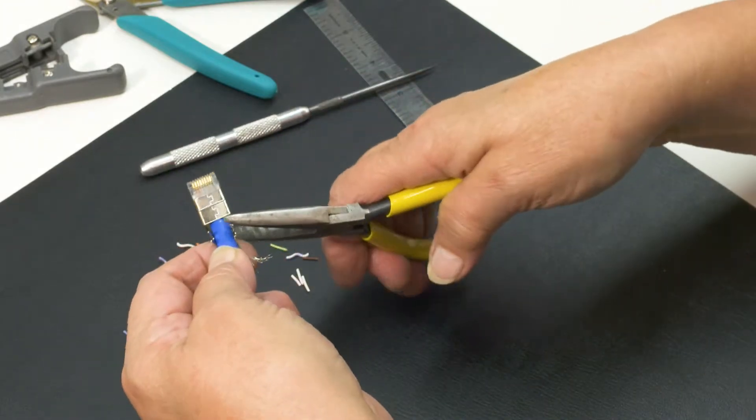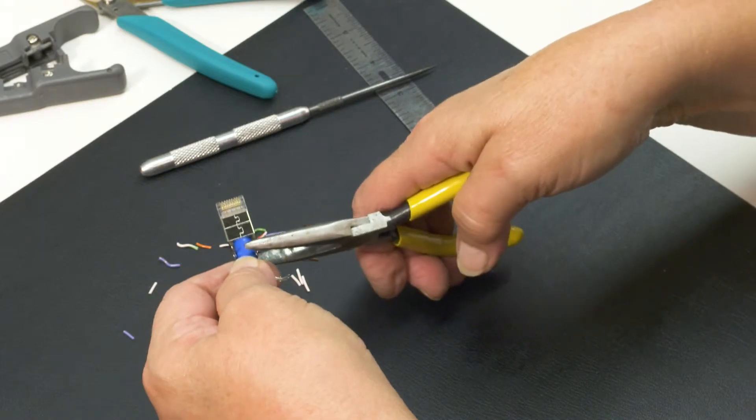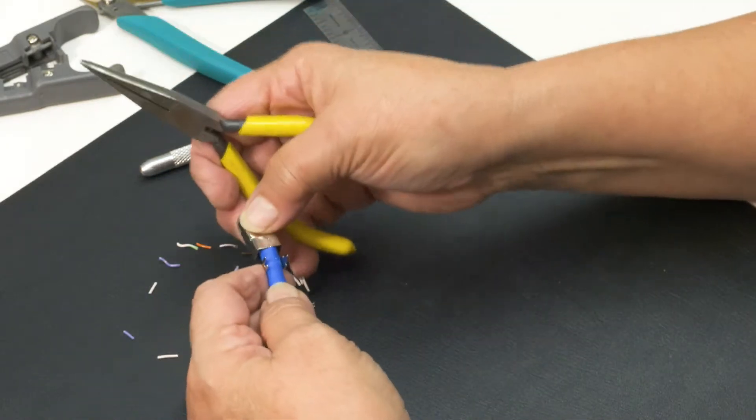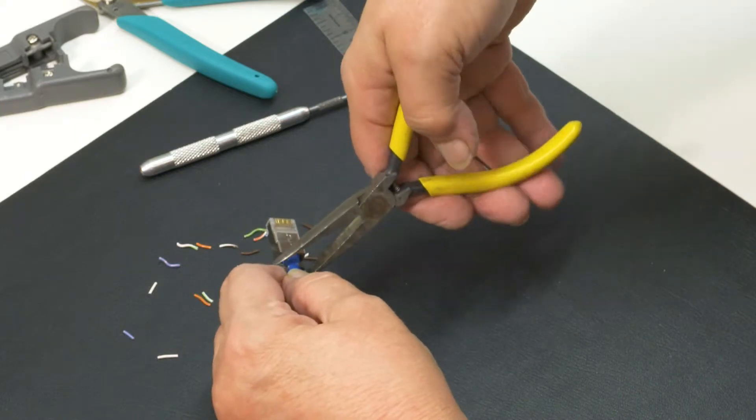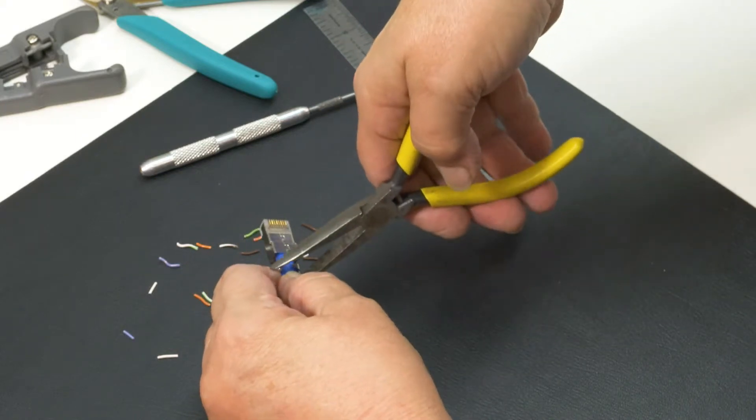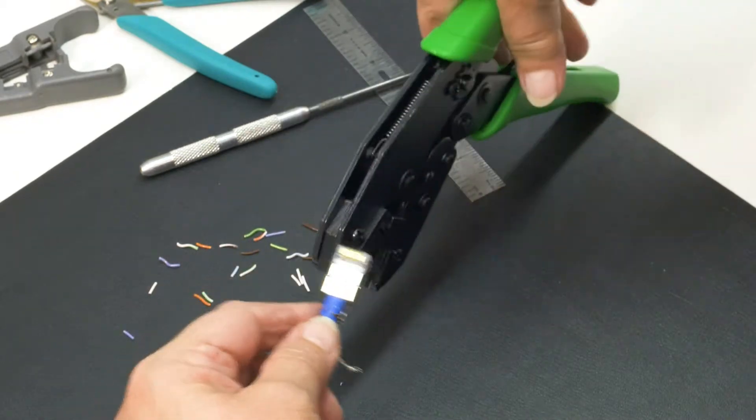Bend the shield clamp over the cable. Use pliers to crimp it down securely. Insert the plug into the crimp tool and squeeze firmly.